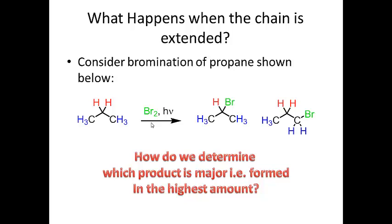If there are more carbons and more abstractable hydrogens, you would expect more products in that radical chain reaction. Looking at propane — a three-carbon chain — we have two hydrogens in the middle and two identical terminal sets of hydrogens. If we brominate this using bromine in the presence of light, we get two products. The question is which one is the major product, formed in the highest amount.